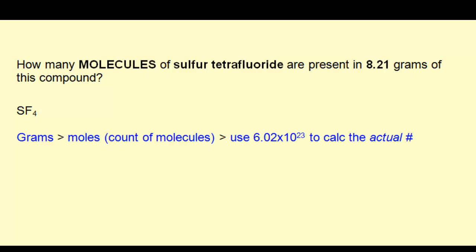The suggested route is grams, which we start with 8.21. Convert that to moles, and that will give us a count of molecules. It won't give us the actual number of molecules; it will begin to get us there. Once we get the moles of the compound, we'll use Avogadro's number to get the actual number of molecules.